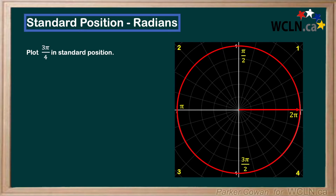Let's try the second method. So, 3pi over 4 — we know that is larger than pi over 2, and it's also less than pi. So it must fall in the second quadrant. Subtracting pi over 2 from 3pi over 4 gives us pi over 4. So we rotate pi over 4 from the positive y-axis, or our pi over 2 line, and then we can draw our angle.